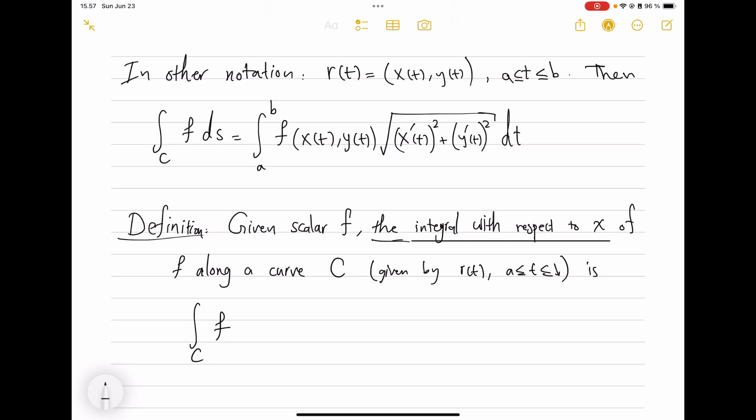So let's write this. Definition: how do we define, given a scalar f, the integral with respect to x? What do we mean? We're trying to define this concept: the integral with respect to x of f along a curve C, given by r(t), t between a and b. First of all, the notation is ∫_C f dx—so that's a new object I am about to define. For this we say it's ∫[a to b] f evaluated at r(t)—that's one number—and here instead of multiplying into ds, which would be this whole thing, I'm multiplying to dx. And dx is—look, dx/dt is x'(t), so this would be x'(t) dt.